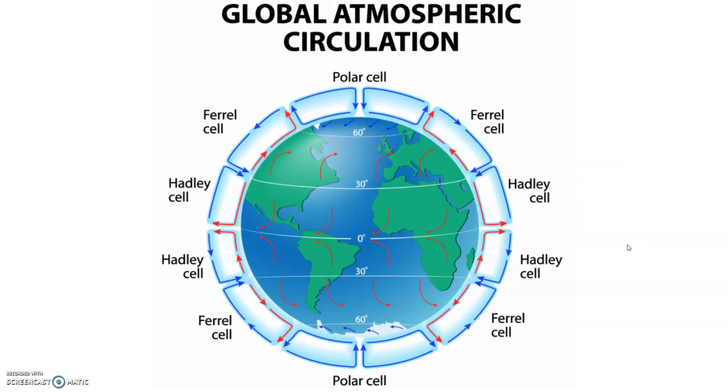It becomes more complicated because we have a lot of oceans and we are constantly spinning on our axis. So we end up with three major cells in both the northern hemisphere and the southern hemisphere.